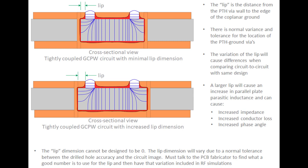At lower frequencies, changes in the lip dimension location are usually not a big deal. But at higher frequencies — definitely at 60 GHz or more — that normal dimensional variation from circuit to circuit will actually change the ground return path and make the circuit perform differently across a variety of RF features.